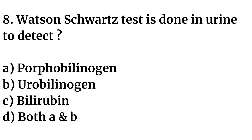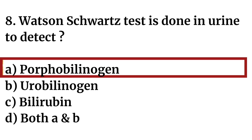Question number eight: Watson-Schwartz test is done in urine to detect — Option A: porphobilinogen. Option B: urobilinogen. Option C: bilirubin. Option D: both A and B. The right answer is Option A: porphobilinogen. Watson-Schwartz test is done in urine to detect porphobilinogen.